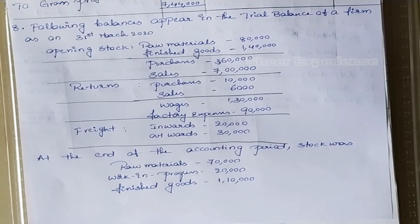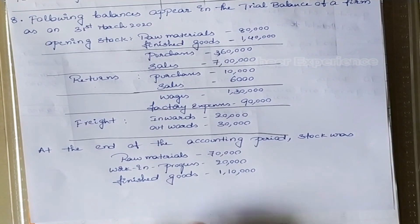Our next problem: the following balances appear in the trial balance of a firm as on 31st March 2020. Opening stock — raw materials: 80,000; finished goods: 1,40,000. Purchases: 3,60,000. Sales: 7,00,000. Purchase returns: 10,000. Sales returns: 6,000. Wages: 1,30,000. Factory expenses: 90,000. Freight inwards: 20,000. Freight outwards: 30,000.